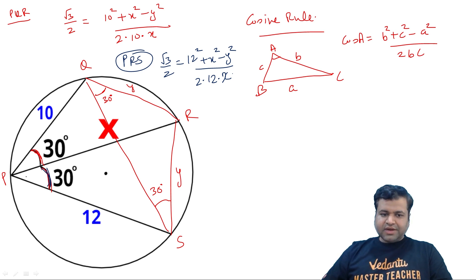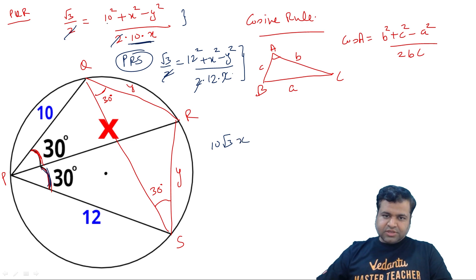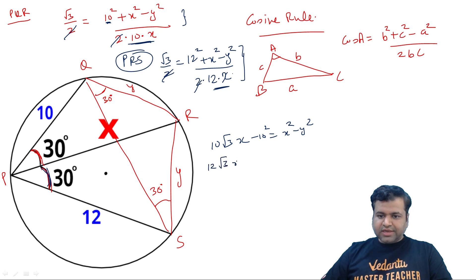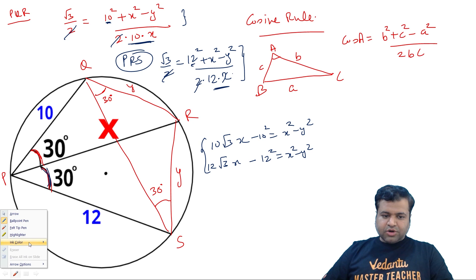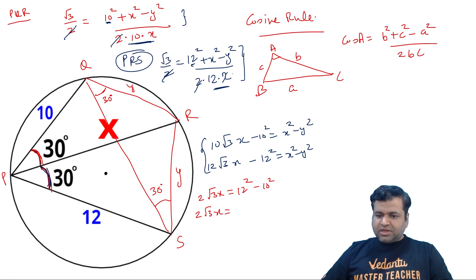We are interested only in x. Cross-multiplying the first equation: 10 root 3 times x equals x squared minus y squared plus 10 squared — wait, rearranging: 10 root 3x minus 10 squared equals x squared minus y squared. Similarly, cross-multiplying the second: 12 root 3x minus 12 squared equals x squared minus y squared. Since both right-hand sides are equal, subtracting gives 2 root 3x equals 12 squared minus 10 squared, which is 144 minus 100 equals 44. So root 3x equals 22, and x equals 22 upon root 3.